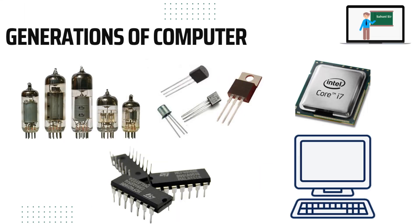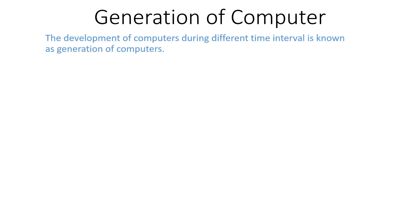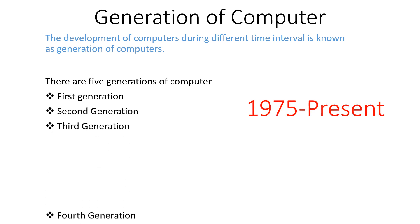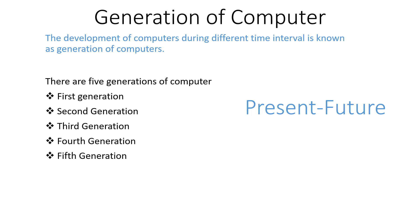Hello and welcome. In this video I will talk about the generations of computers, and you are going to know the different generations and their features. The generation of computers refers to the development of computers during different time phases. There are five generations: first, second, third, fourth, and fifth generation.